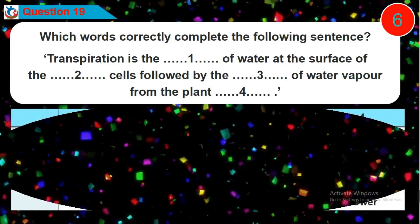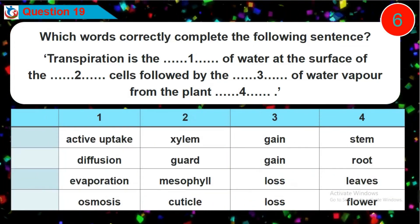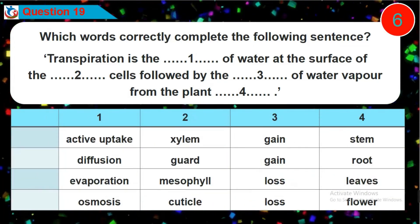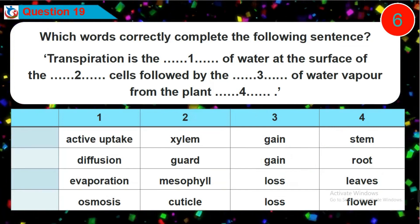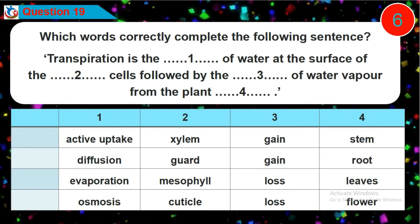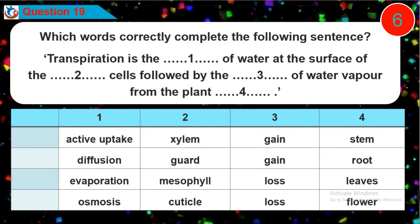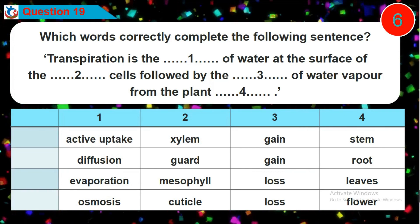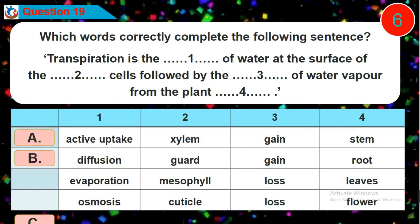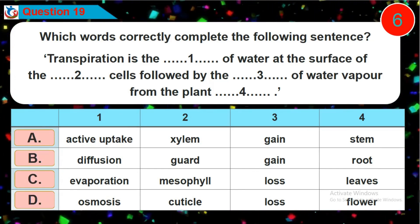Question 19. Which words correctly complete the following sentence? Transpiration is the blank of water at the surface of the blank cells, followed by the blank of water vapor from the plant blank. Is it option A, B, C or D?